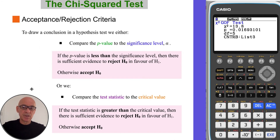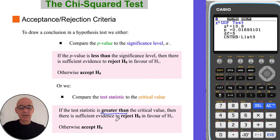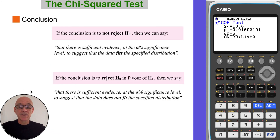To draw a conclusion in a chi-squared test, we can either compare the p-value to the significance level, or compare the test statistic to the critical value if given in the question. If the p-value is less than the significance level, there is sufficient evidence to reject the null hypothesis. Similarly, if the test statistic is greater than the critical value, there is sufficient evidence to reject the null hypothesis. If not, we accept the null hypothesis. The final step is to state the conclusion.